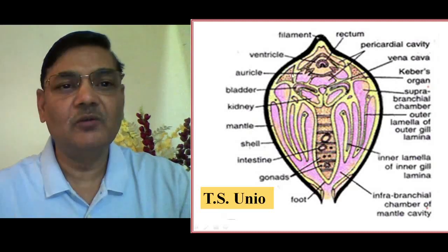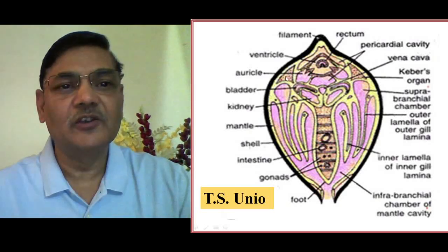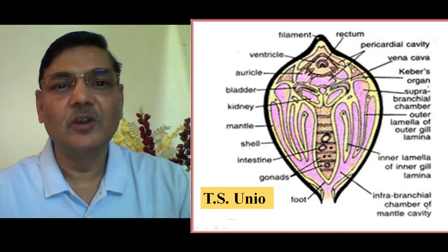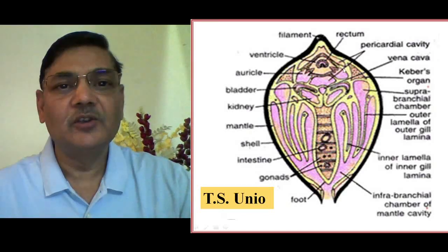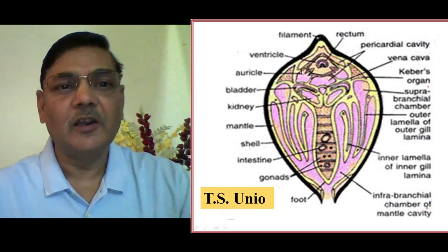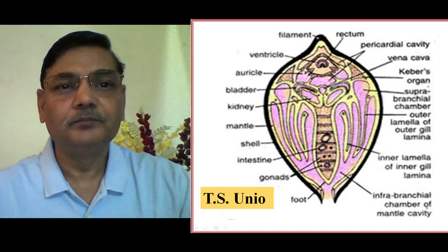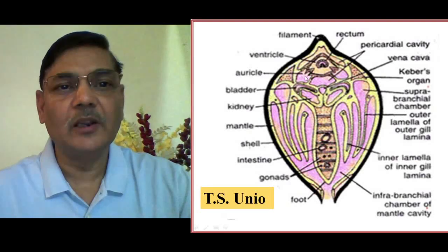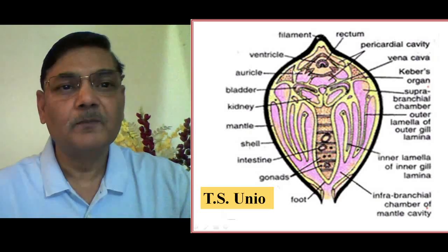On the left side, this triangular structure — which I am indicating with the pointer — is Keber's Organ. Likewise, on the right side, this triangular structure is also Keber's Organ. It is located very close to the heart. These two structures are the auricles, and on the upper side you can see the ventricle. The auricles and ventricle are covered with the pericardial membrane, which covers the chambers of the heart, and the space enclosed is referred to as the pericardial cavity.